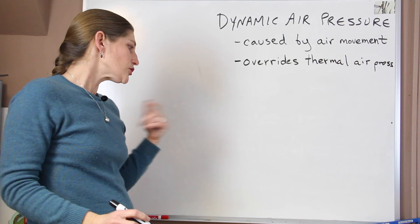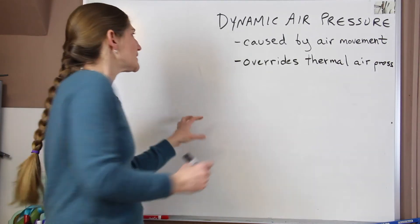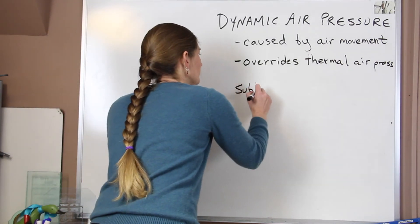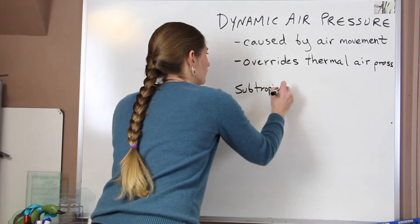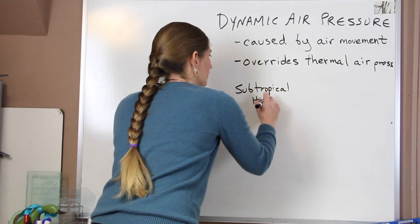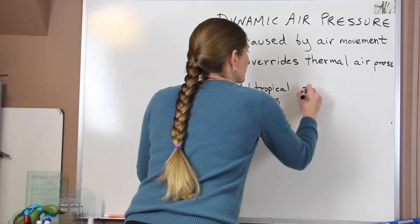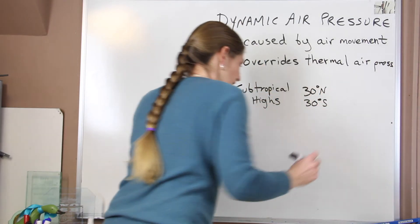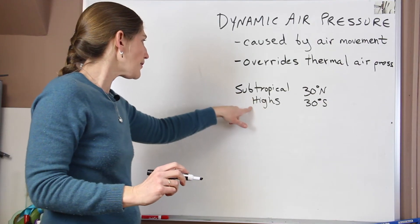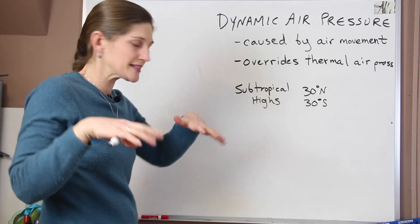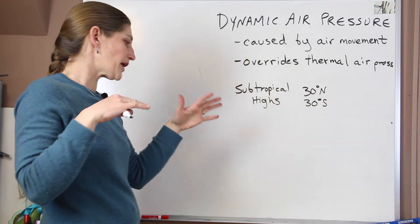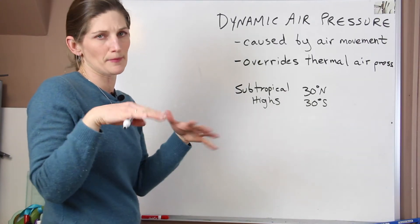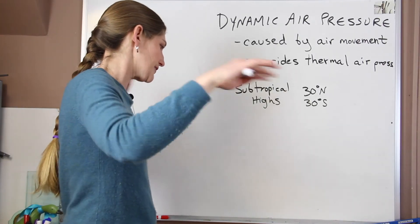So a couple of examples, we see our subtropical highs. And those are located at 30 degrees north and 30 degrees south latitude. These are high pressure systems. So the air tends to be sinking.